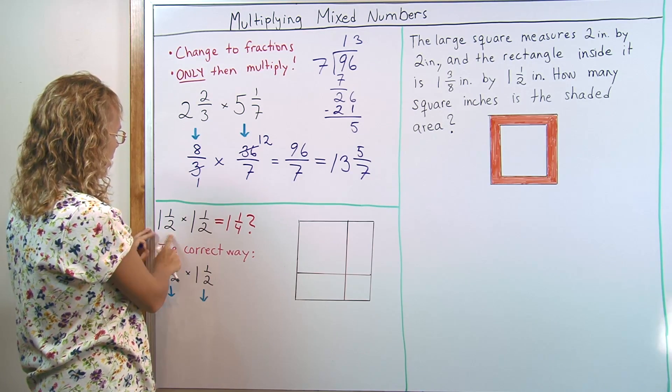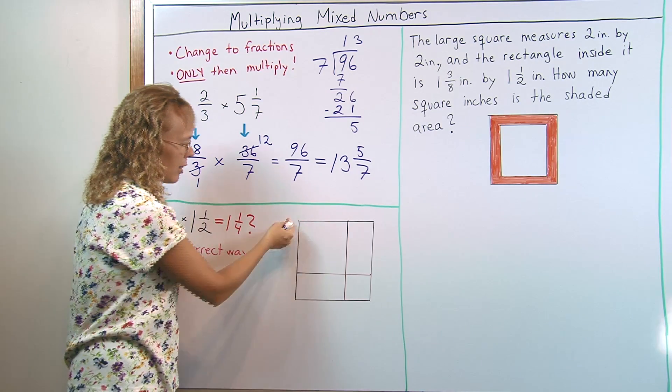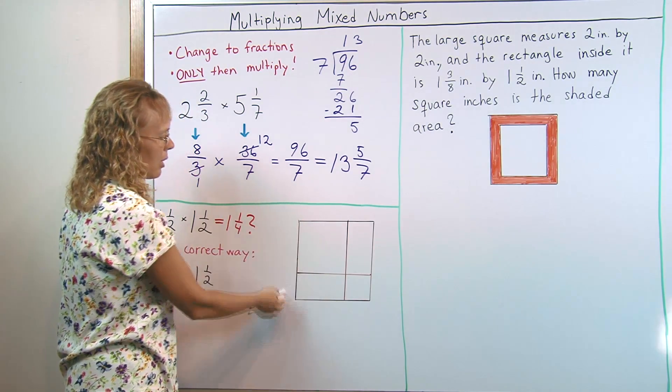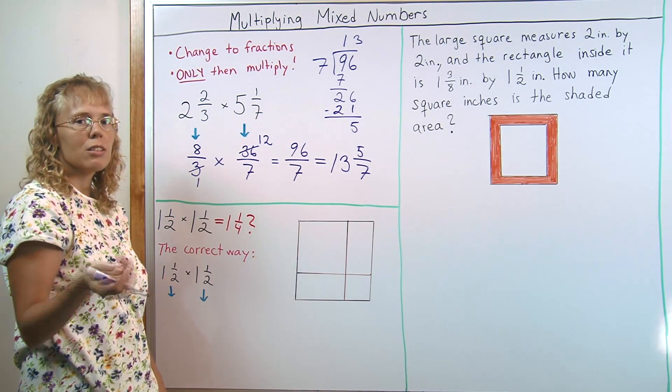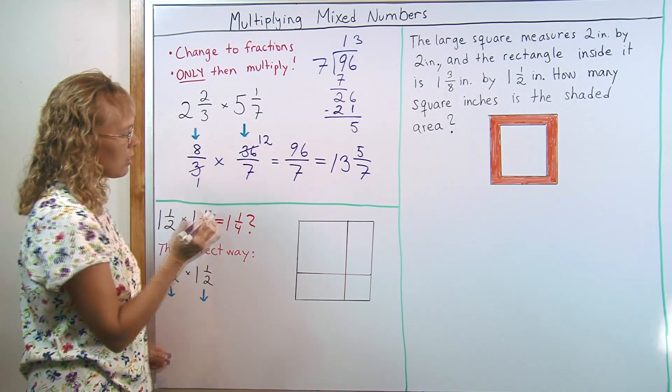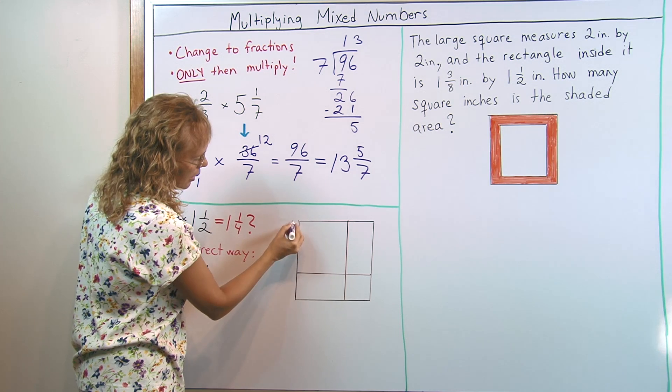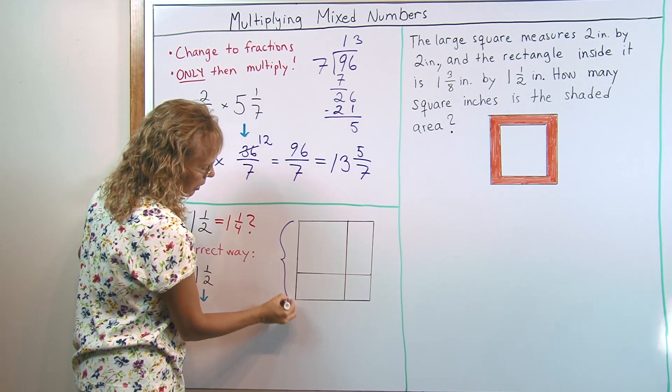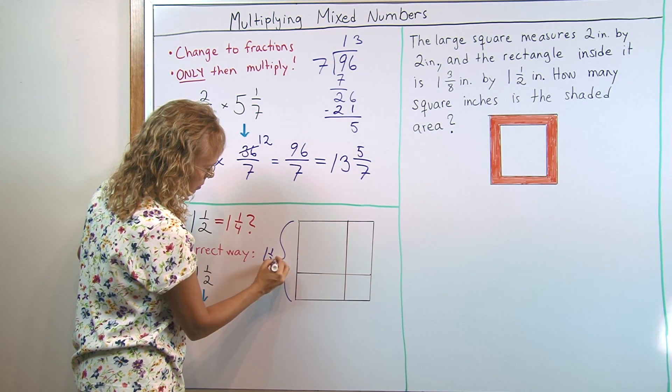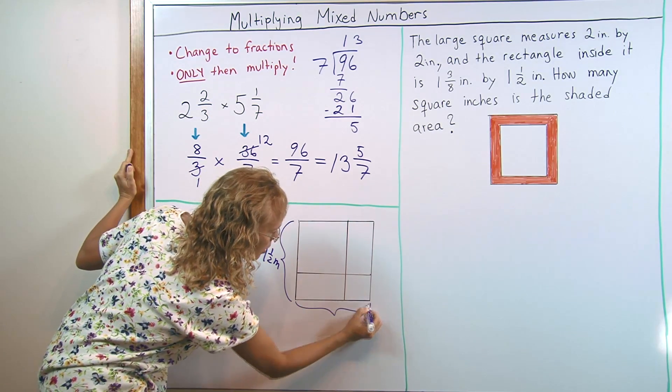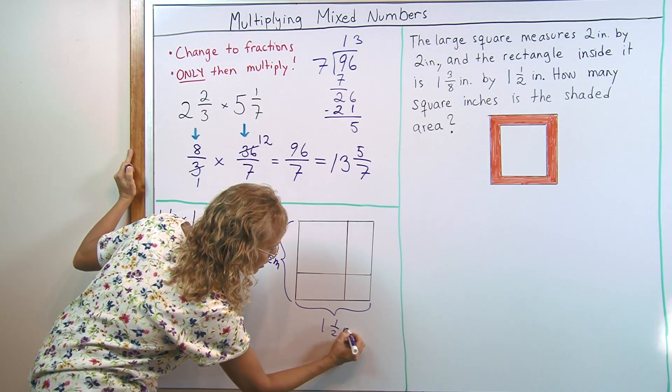So let's take something that is 1 and 1/2. One side here is 1 and 1/2 something. Meters, feet, inches, whatever. Let's say this is 1 and 1/2 meters. And this side here is also 1 and 1/2 meters.